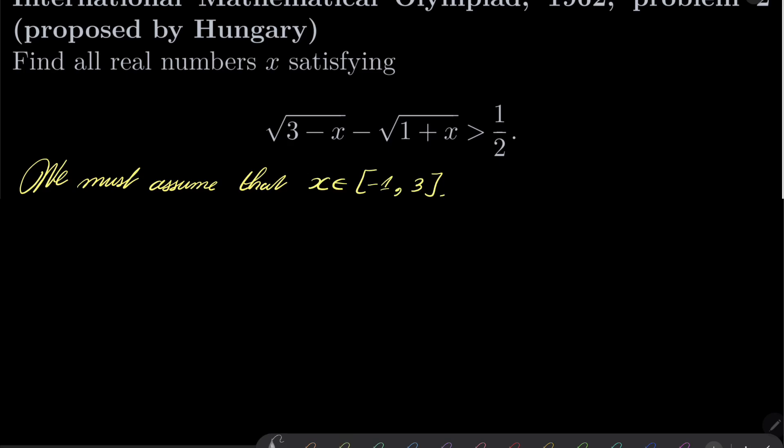Because this square root, under the square root there must be a non-negative number here as well. Alright, and now,